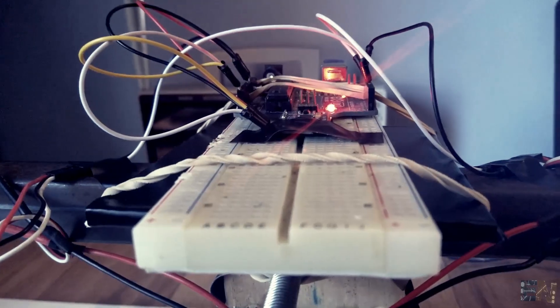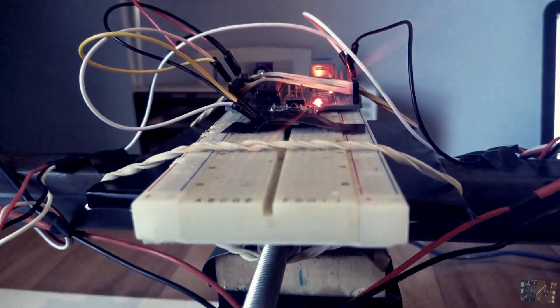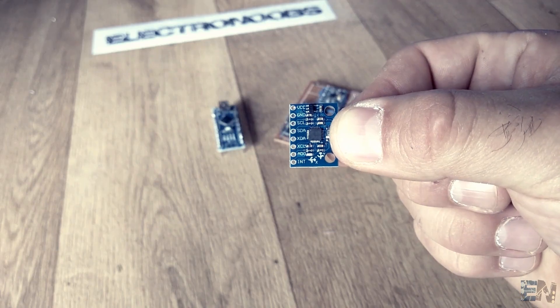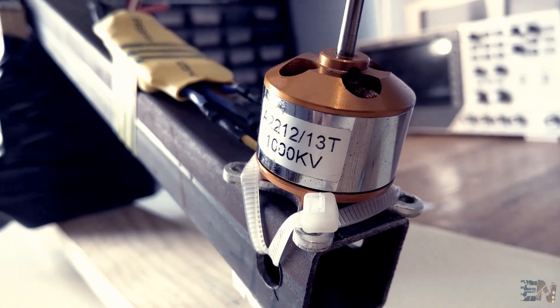To control the inclination angle, the system uses the MPU6050 gyro and accelerometer, and to control the movement, these two brushless motors.